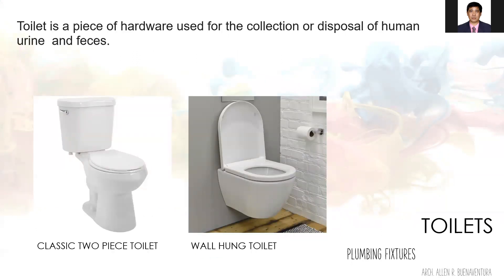A toilet is a fixture that consists usually of a water flush bowl and a seat, and is used for defecation and urination. Flush toilets are usually connected to a sewer system in urban areas and to septic tanks in isolated areas. Dry toilets are connected to a pit, removable container, composting chamber, or other storage and treatment devices. Toilets are commonly made of ceramic, porcelain, concrete, plastic, or wood.